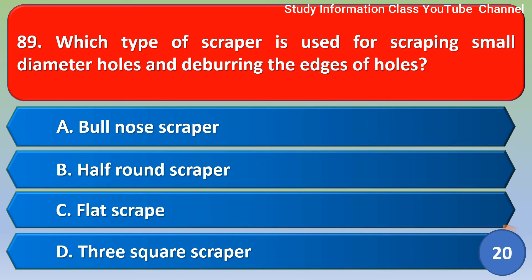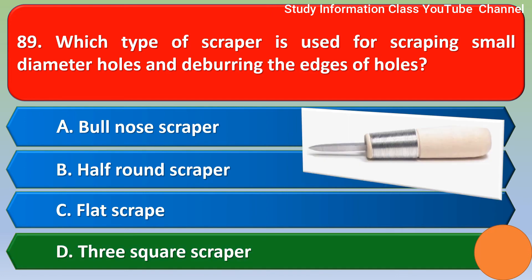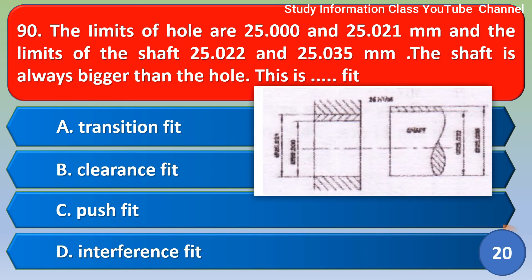Next question: Which type of scraper is used for scraping small diameter holes and deburring the edge of the holes? The correct answer is option D, three square scraper.